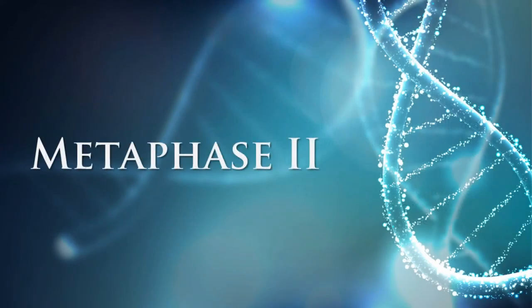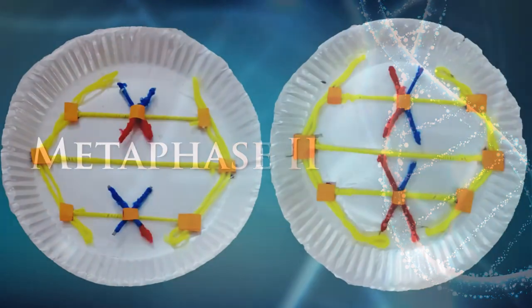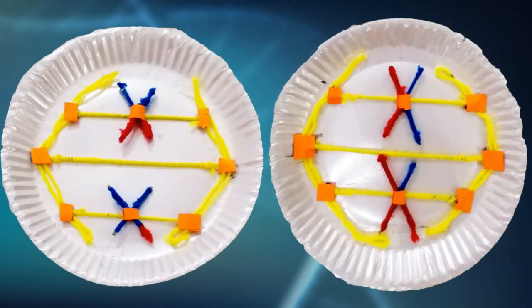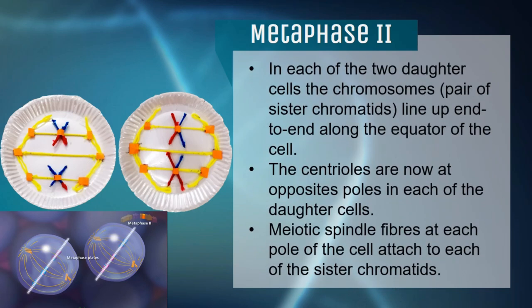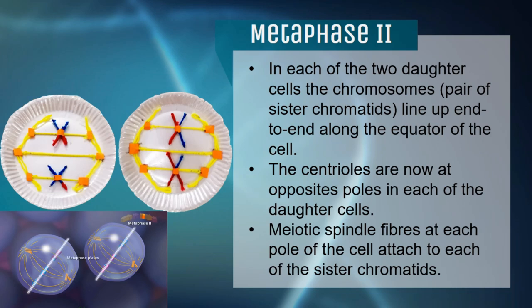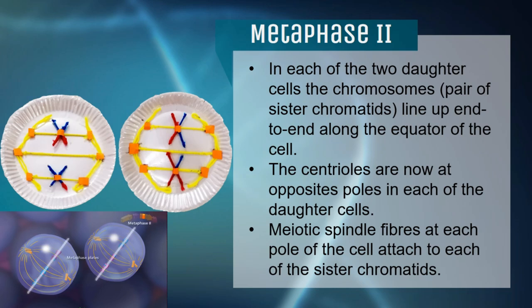Then we proceed to Metaphase II. Here we have the model for Metaphase II. After the membrane once again disintegrates and the centrioles reach their destination at different sides of the cells, the chromosomes line up along the equator of the cell. This time, however, the chromosomes are lined up alone in each daughter cell, unlike in Meiosis I where they line up alongside their homologue. Meiotic spindle fibers extend and attach to one of each sister chromatid.